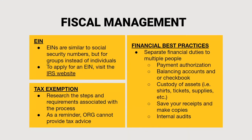Other important fiscal elements to consider are EINs, tax exemption, and other practices. EINs are similar to social security numbers but they're for groups instead of individuals. You should not be using someone's social security number for an RSO's bank account, as this can cause huge issues. To apply for an EIN, you can visit the IRS website. Student organizations can decide whether or not tax exemption is something they would like to pursue, and ORG advises that RSOs research the steps and requirements to see if it's a good fit. Note that ORG cannot provide tax advice. Other financial best practices include separating financial duties to multiple people within the organization to ensure all transactions are in accordance with the organization's goals and mission.